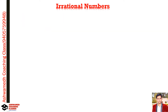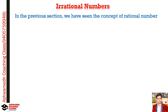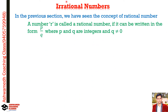Now, what is an irrational number? In the previous section we saw the concept of rational numbers. A number r is said to be a rational number if it can be written in the form p/q, where p and q are integers and q is never zero. This is the definition of rational number.